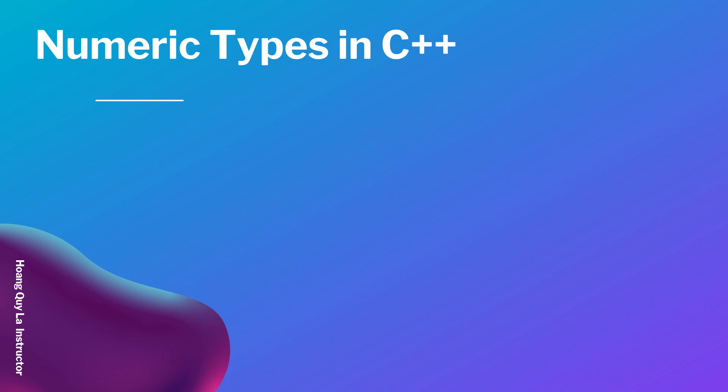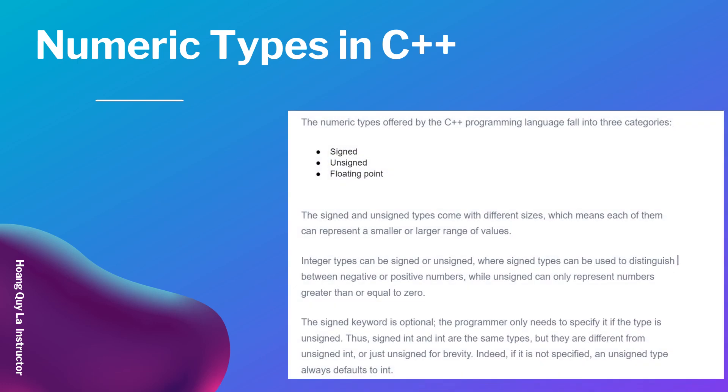The numeric types in C++ fall into three main categories: the first one is signed, the second one is unsigned, and the third one is floating point. The signed and unsigned types come with different sizes, which means each of them can represent a smaller or larger range of values. Integer types can be signed or unsigned, where the signed type can be used to distinguish between negative and positive numbers, while unsigned can only represent numbers greater than or equal to zero.